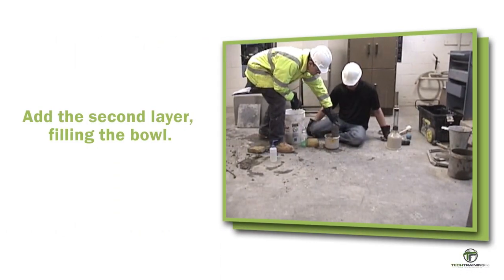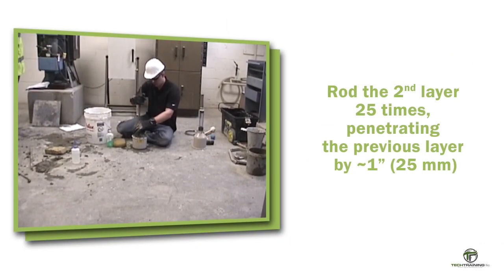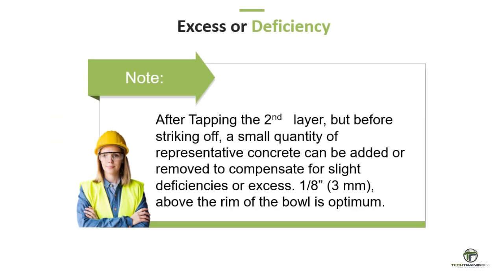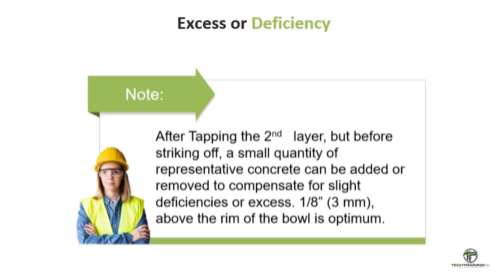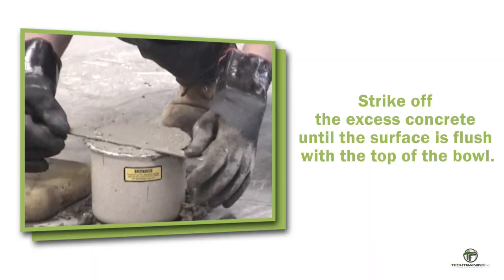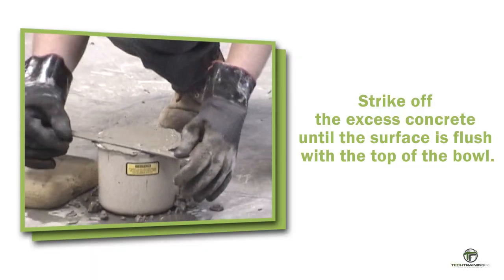Add the second layer of concrete, again moving the scoop around the outer edge for even distribution. Rod the second layer 25 times, penetrating the previous layer by about 1 inch or 25 millimeters. Tap the sides of the bowl 10 to 15 times with the mallet. After tapping the second layer but before striking off, a small quantity of concrete can be added or removed — 1/8 inch or 3 millimeters above the rim is optimum. Strike off the excess concrete with the strike-off bar until the surface is flush with the top of the measuring bowl. Wipe the flange of the measuring bowl clean.